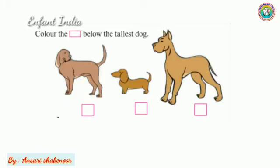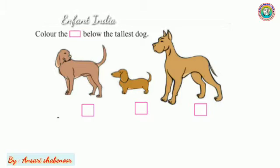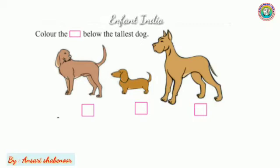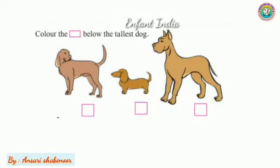Here, one, two, three — there are one, two, three dogs. The question is: color the box below the tallest dog. Tallest means sabse uncha.